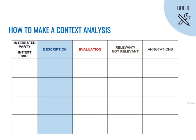The matrix has several columns. First column: here you will put all your interested parties, internal issues, and external issues — think of this column as just a list. In our milestone, you will find a separate matrix for interested parties and another for internal and external issues. Second column: here you will put a description that details what you wrote in the first column. Third column: here you will put how it could influence the way the company manages OHS.